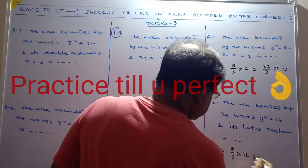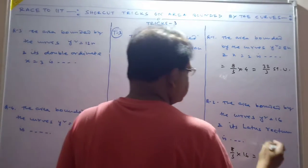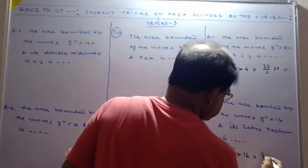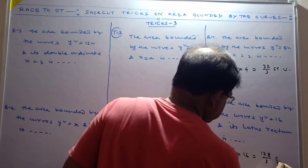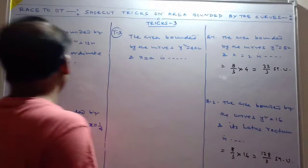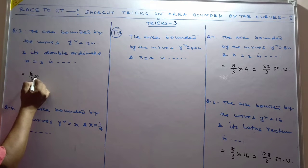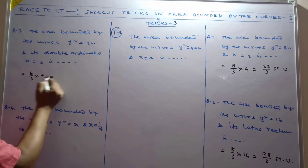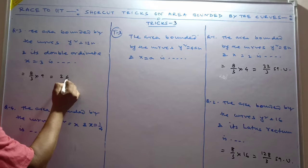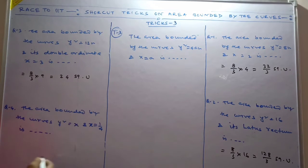And so this is equal to 8/3 times 9, so that is 24 square units. This is equal to 8/3 times 1/16, so that is 1/6 square unit.